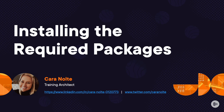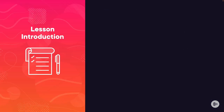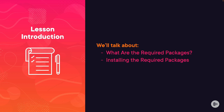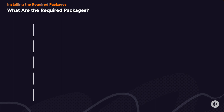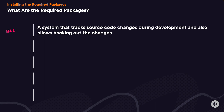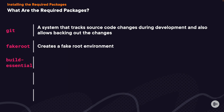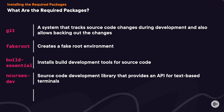Hello, and welcome to this lesson, Installing the Required Packages. We'll talk about what the required packages are for a kernel build and how to install them. First, we're going to install Git, a system that tracks source code changes during development. Fake root creates a fake root environment. BuildEssential installs build development tools — it's a meta package that creates links to other packages installed for dependency. ncurses-dev is a source code development library, and xz-utils is a utility for file compression.